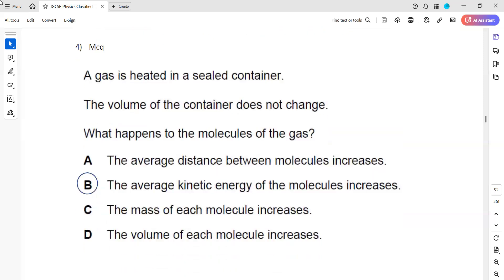In question four, a gas is heated in a sealed container. When we say a sealed container, it means the volume is fixed. If the volume is fixed, what is the relation between pressure and temperature? They're directly proportional: higher temperature, higher pressure. What happened to the molecules of the gas? So if we increase, if it is heated, the pressure will also increase. The options are: the average distance between the molecules increases. No, because if the container is a rigid container, a sealed container, so the volume does not change at all. The space occupied by the gas molecules will be the same as the volume of the cylinder.